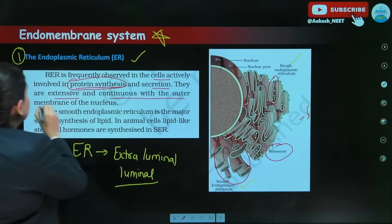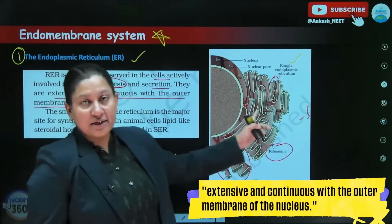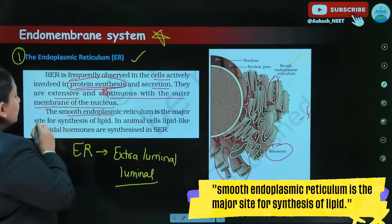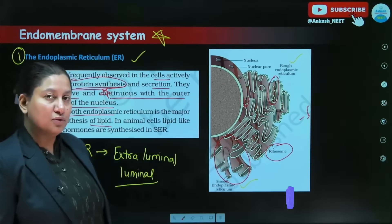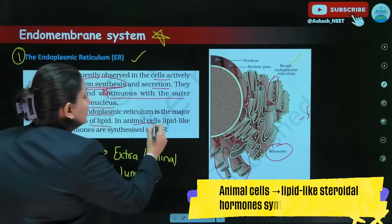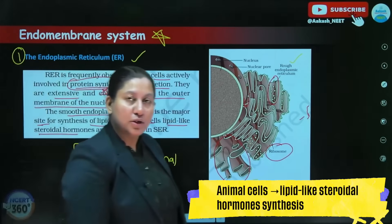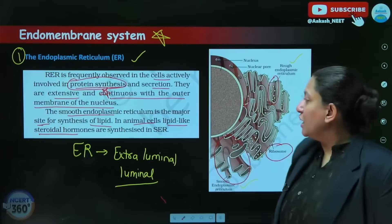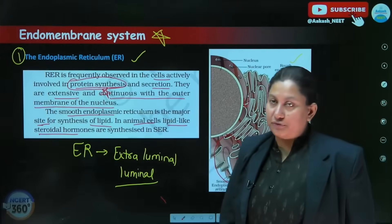The RER is extensive and continuous with the outer membrane of the nucleus — a very important point, also clear from the diagram. The SER is the major site for synthesis of lipids, because it is not associated with ribosomes and therefore not associated with protein synthesis. In animal cells, the SER has a special function to produce steroidal hormones — lipid-like steroidal hormones — which help in the control and coordination of different functions in the animal body.